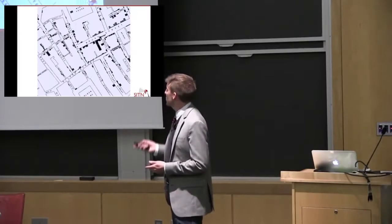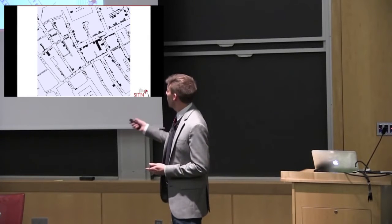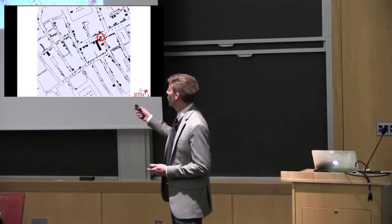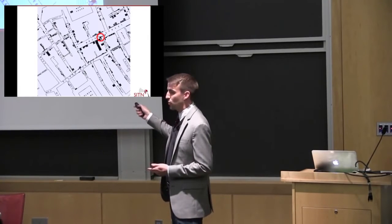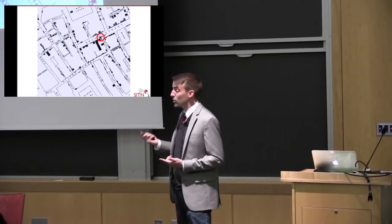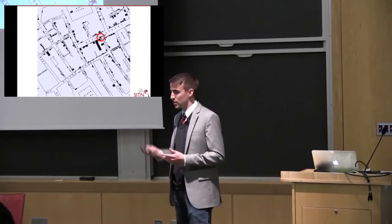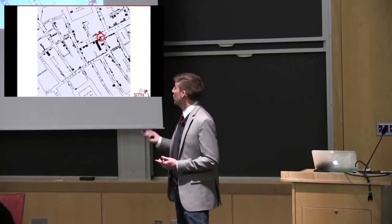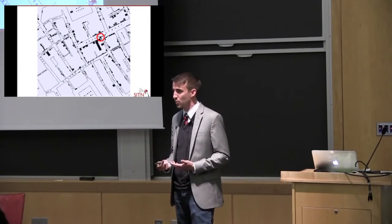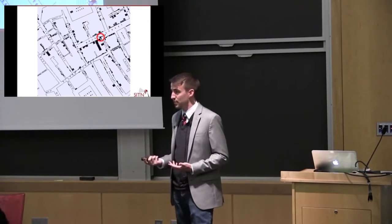He was shocked to find that almost every one of these vertical lines represented a person who drank water from the Broad Street water pump right here on the corners. And so the local authorities, kind of skeptical of his results, removed the water pump handle so that no one could drink from that water source anymore, and within a few days the outbreak subsided.